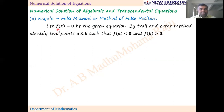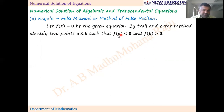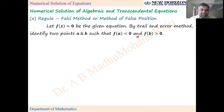How we can solve using this method, we'll see. Let f(x) = 0 be a given equation. By trial and error method, identify two points a and b such that f(a) < 0 and f(b) > 0. We identify two values by trial and error such that at one point the function value is negative and at another point the function value is positive, which means that the root of the given equation lies between a and b.